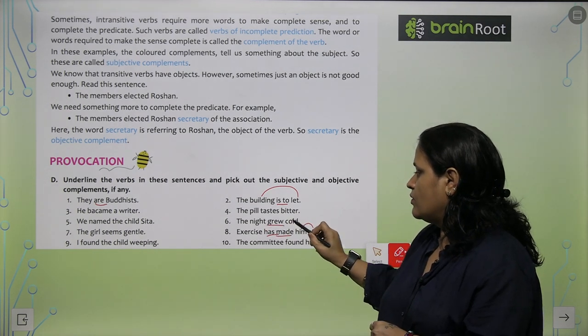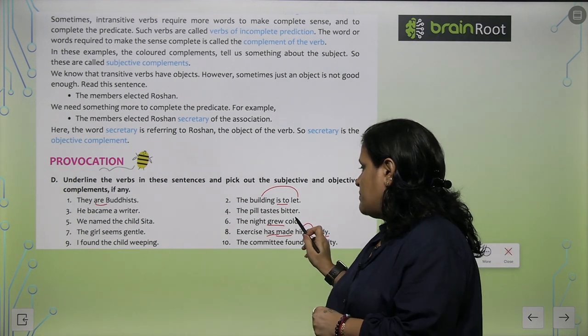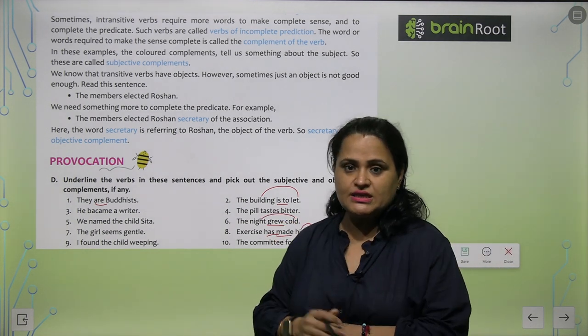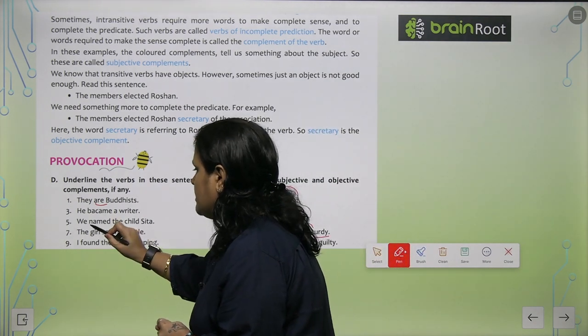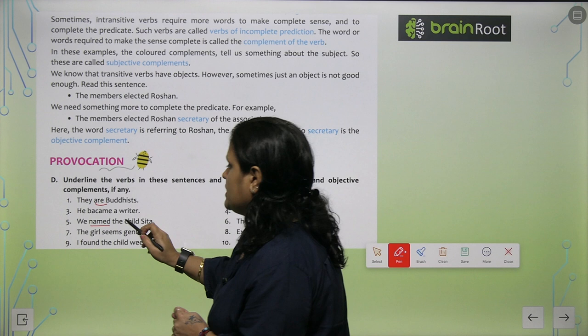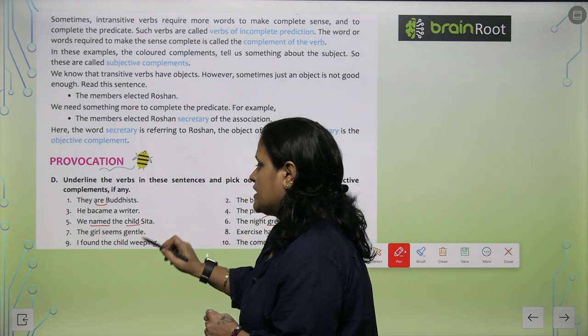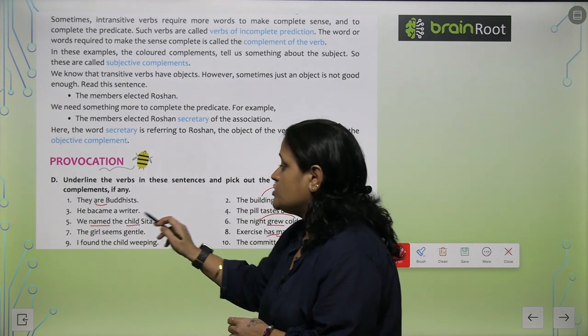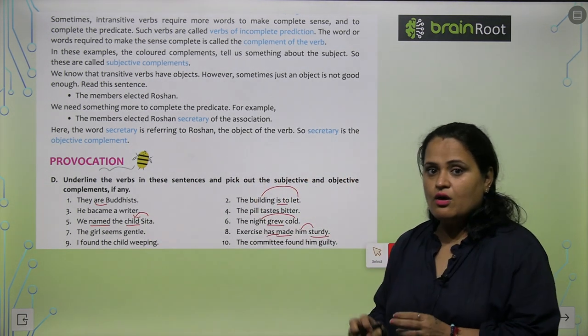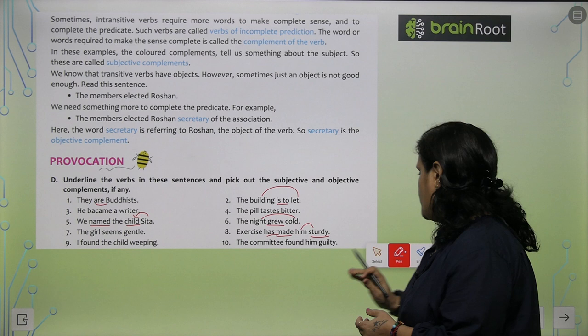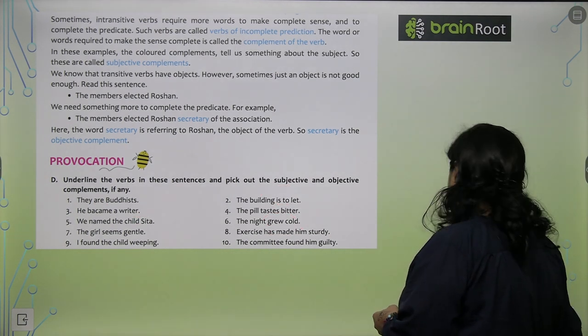The night grew cold. Is mein kya hai? Grew. The night grew cold. Cold kisko complement kar raha hai, night ko, so this is subjective complement. We named the child Sita. Named is the verb, we named the child. Child is the object. Sita, Sita kis ka naam hai, child ka, so this is objective complement. Very simple to do, rest of the exercise you can do yourself.